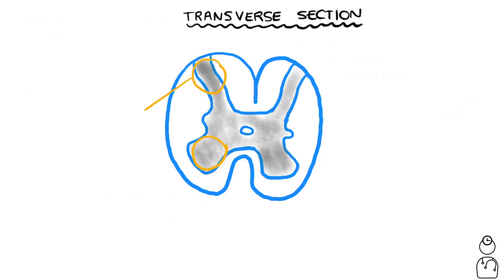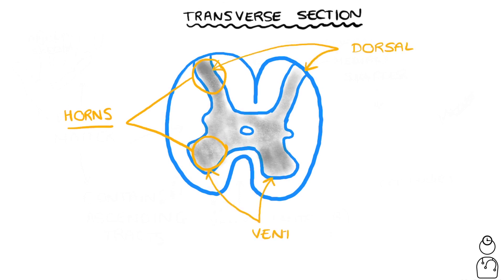These two structures are known as horns. The back two are known as the dorsal horns, and the front two are known as the ventral horns. We're going to be focusing on the dorsal horns for this video.